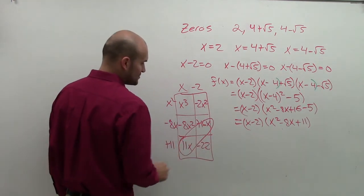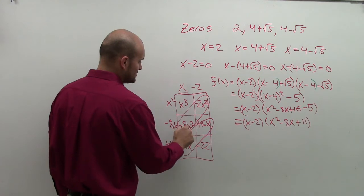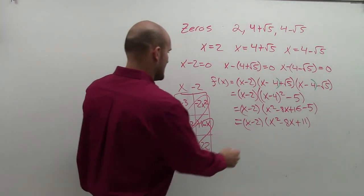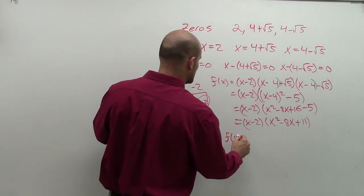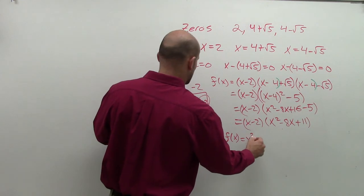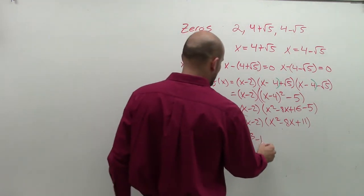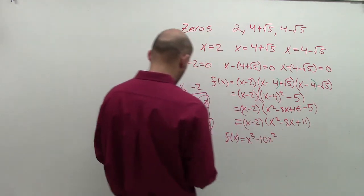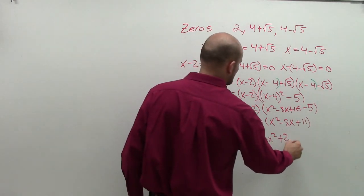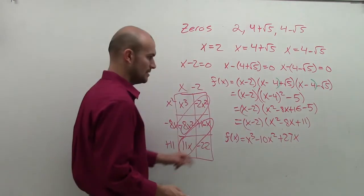These two are the same, so I can combine them, and these two are the same, so I can combine them. So what I have, my final answer, my function is f of x equals x cubed minus 10x squared plus 27x minus 22.